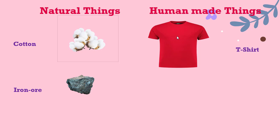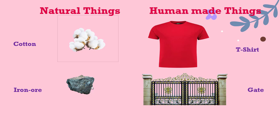Now let us see the next example. This is the iron ore. It is found in mines and it is a natural thing — already present in the earth's surface. Now from this iron ore, we are making an iron gate. So iron ore is converted to an iron gate by human beings, making it a human made thing.